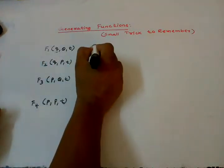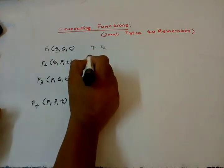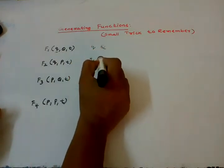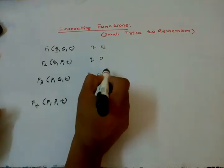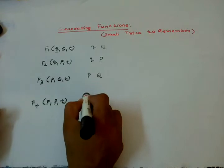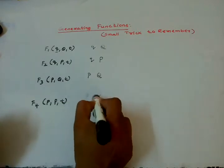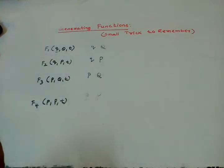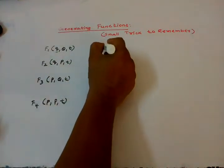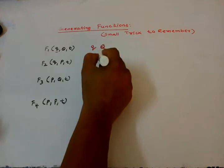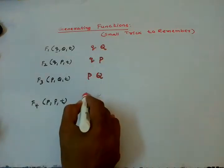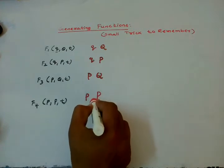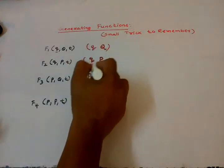So the four variable combinations are: small q capital Q, small q capital P, small p capital Q, and small p capital P. These are the four pairs corresponding to the four generating functions.